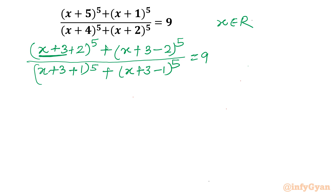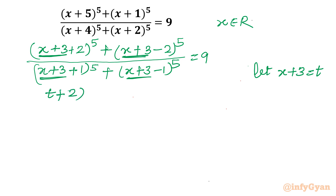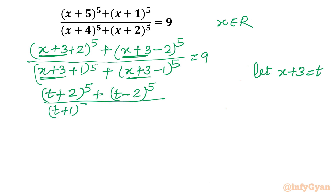Now you can see x+3 appears in all four terms. So our substitution will be x+3 = t. The equation is then transformed into: (t+2)^5 + (t-2)^5 over (t+1)^5 + (t-1)^5 = 9.